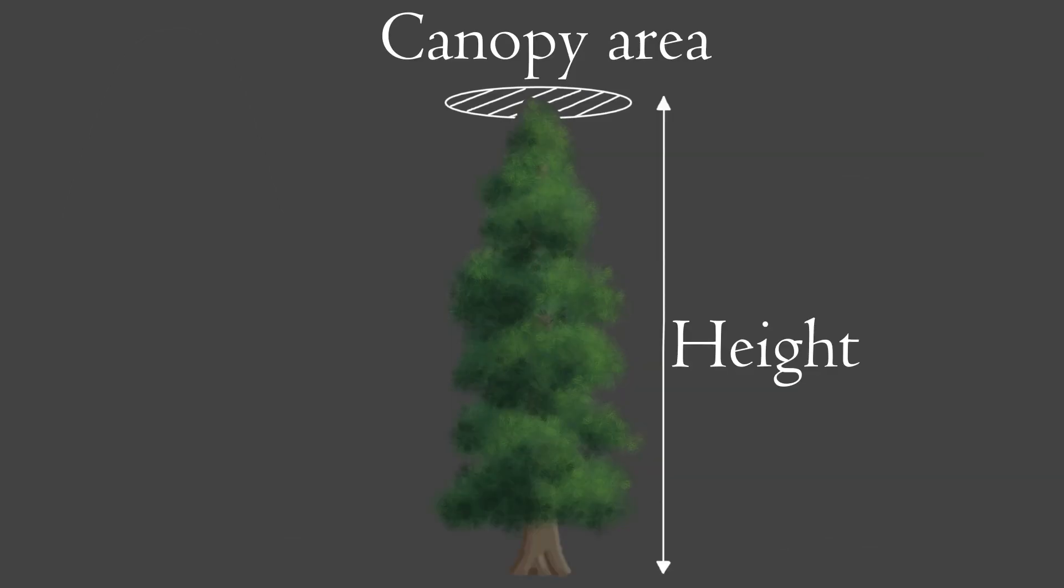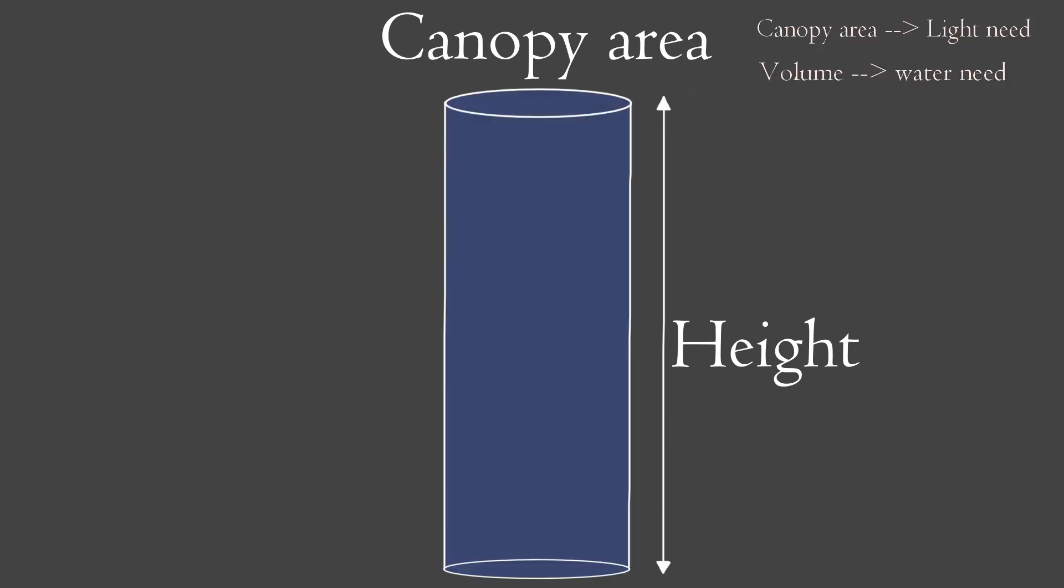In my model, a plant is characterized by two parameters, a height and a canopy area. This can be thought of as a cylinder. The top area of the cylinder is proportional to the amount of sunlight required, whilst the volume is proportional to the amount of water required. The height of the plant also determines if it's shaded by other plant species.